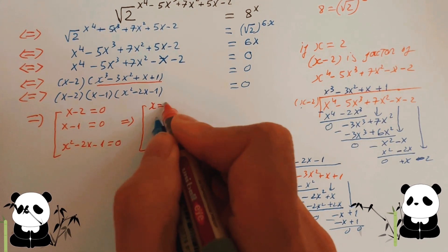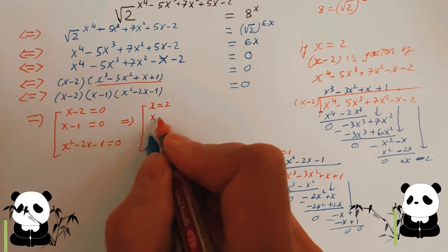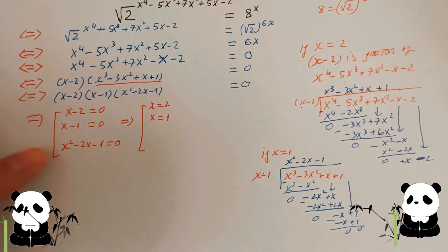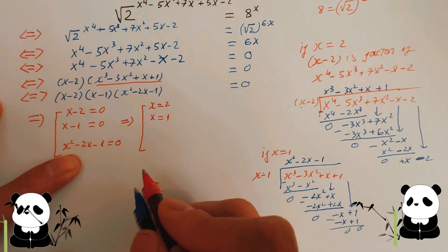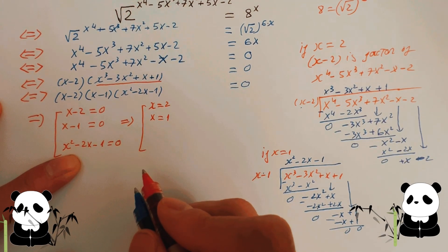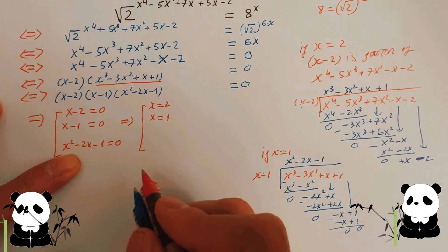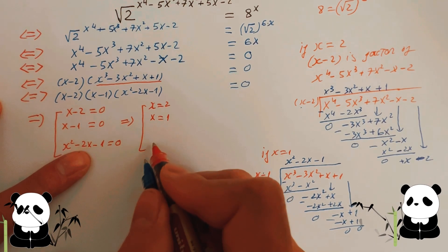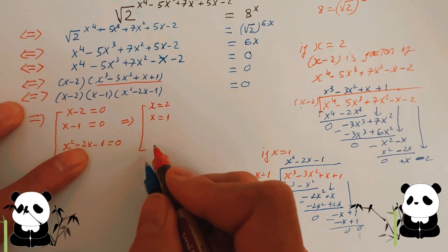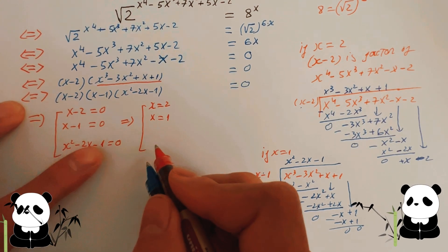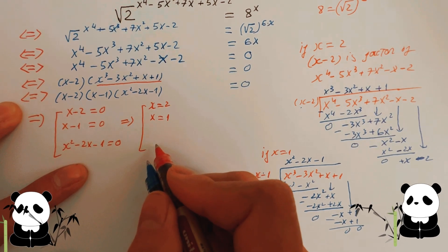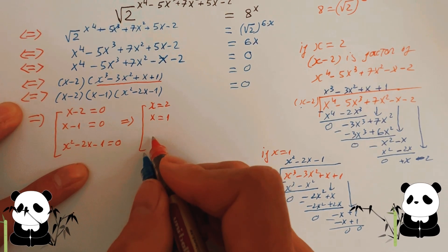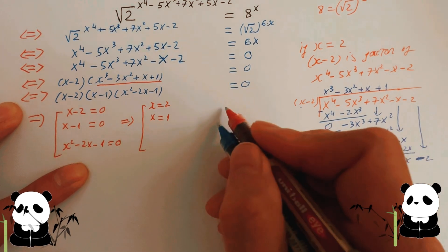So from the first factor, x equals two. From the second factor, x equals one. For the quadratic equation x squared take away two x take away one equals zero, you can use the quadratic formula where a equals one, b equals negative two, and c equals negative one.